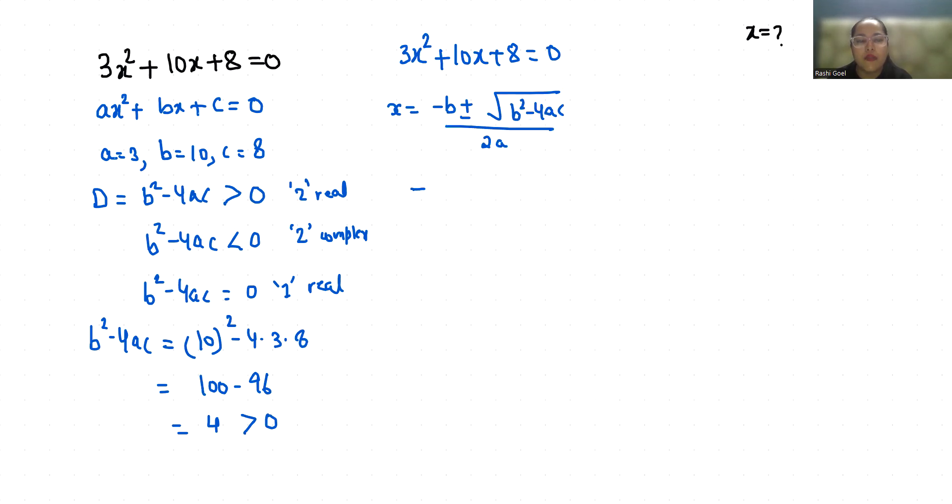The value of b is 10, so -10 ± √(b² - 4ac). We already found the value of b² - 4ac, that is 4, divided by 2 times a, which is 3. So -10 ± √4 / 6. The square root of 4 is 2, so -10 ± 2 / 6.